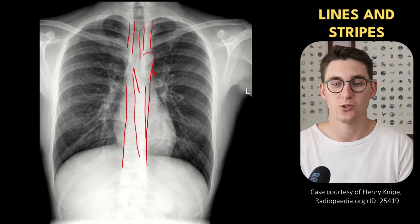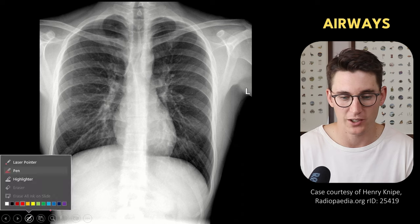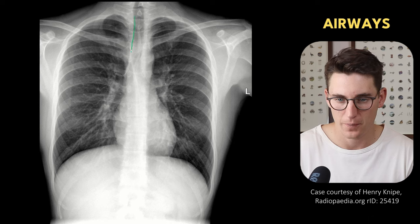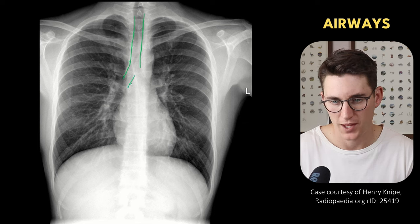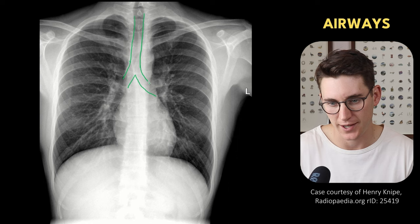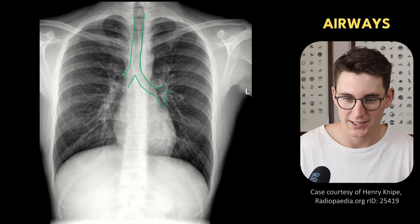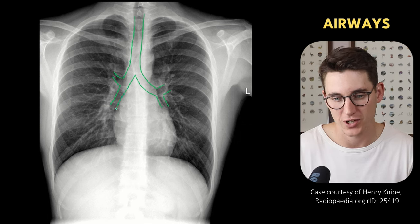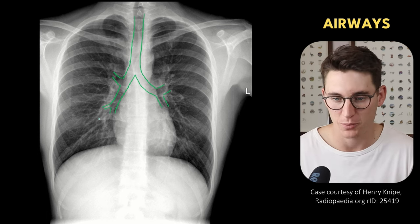We can now move our attention to the airways — the actual respiratory system. I'm going to draw them in green. We can see our trachea coming down centrally, right down the middle, bifurcating into our right main bronchus as well as our longer and more oblique left main bronchus. Our left main bronchus divides into our left upper lobe bronchus and our left lower lobe bronchus. The right-hand side divides into our right upper lobe bronchus and then our bronchus intermedius, which then divides into our right middle and right lower lobe bronchi.